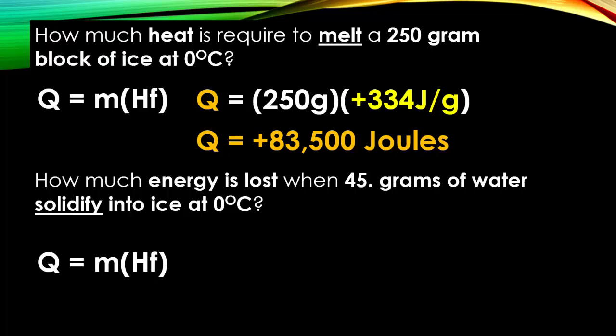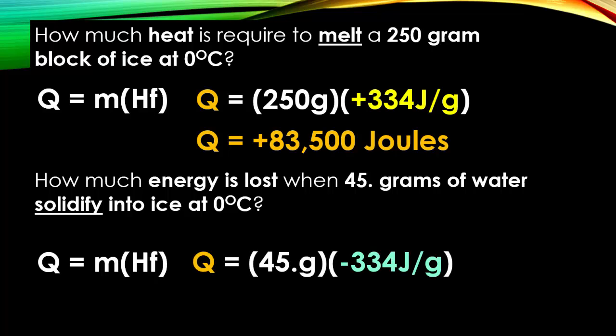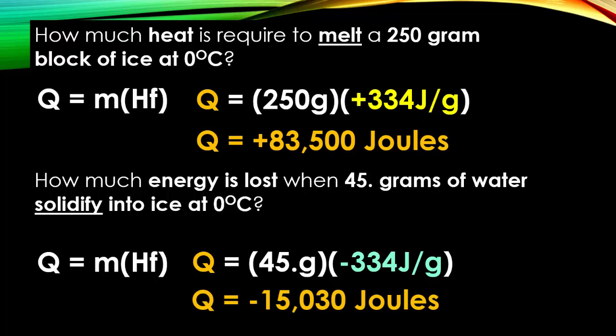Now the inverse: how much energy is lost when 45 grams of water solidify into ice at 0 degrees Celsius? Our Q is unknown, our mass is 45 grams, and because water is solidifying into ice — which is exothermic — our Hf value is going to be negative. So we do 45 times negative 334, giving us negative 15,030 joules of energy lost.